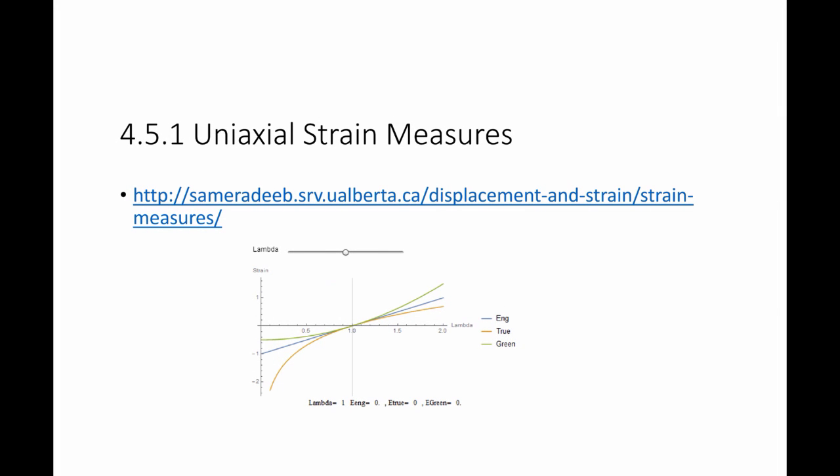On the course website there is a tool that, given lambda, it will give you the value of the different strain measure. And you can see here, the engineering strain is linear because the engineering strain is actually equal to lambda minus 1. The green strain is usually higher and the true strain is usually lower than the engineering strain. And right around when lambda is equal to 1, all the three strain measures give you a similar value.